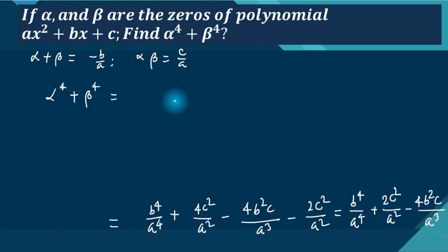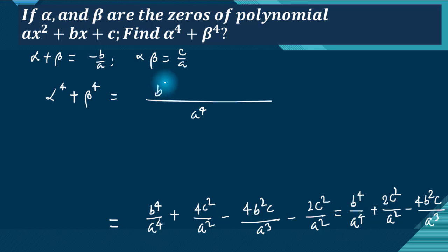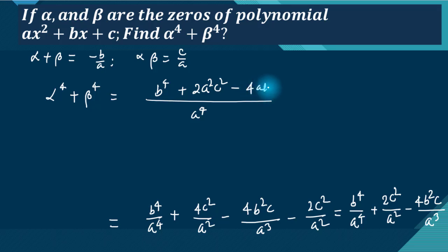The final simplified result gives us alpha to the fourth plus beta to the fourth equals b to the fourth minus 4ab squared c plus 2a squared c squared, all divided by a to the fourth. This is the value expressed in terms of a, b, and c.